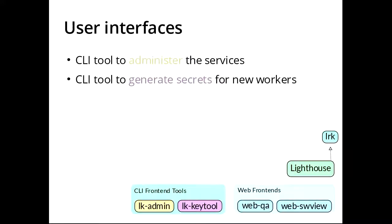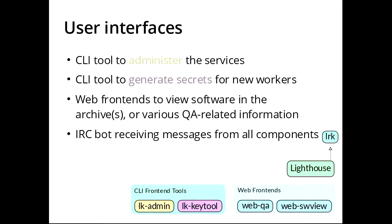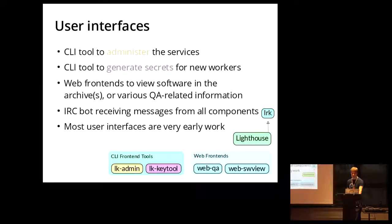We also have user interfaces which contain CLI tools to administer the services right now, so we still SSH into a machine in order to get things done. But there are also web front-ends in development. Some of them are already working in order to view QA information in a central location instead of going through many places to view what's happening in the distribution. There's also an IRC bot in development to announce certain changes that are interesting, like a new image was built — please test it in the IRC channel. Most of the user interfaces are very early work because I'm actually not a web developer, so this is kind of new territory for me.